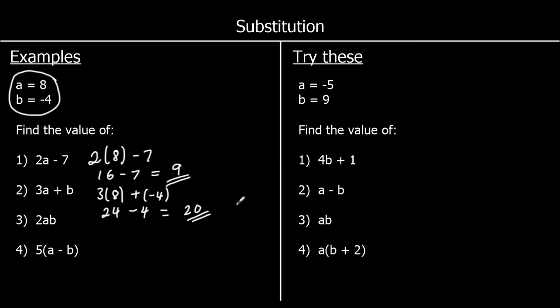Question 3: 2ab, meaning 2 times a times b. So 2 times 8 times negative 4. 2 times 8 is 16, so it's 16 times negative 4. A positive times a negative is going to be negative. To multiply by 4, I'm going to double and double again. Double 16 is 32, and double 32 is 64. So the answer is negative 64.